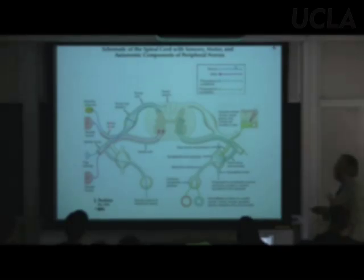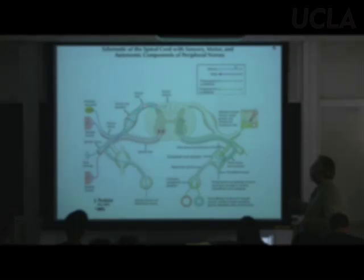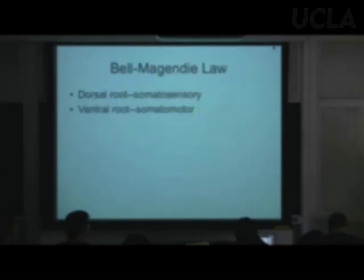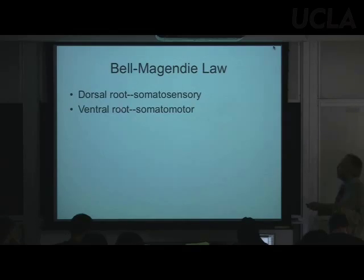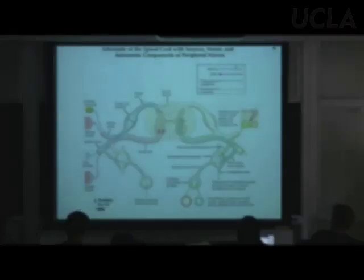They don't split into two roots until the nerve gets into the spinal column — it's got to get inside the bone first. Now I'm going to tell you about the Bell-Magendie Law: the dorsal root is somatosensory and the ventral root is somatomotor.